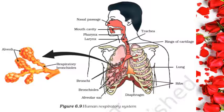The direction of diffusion depends upon the environmental conditions and the requirement of the plant. At night, when there is no photosynthesis, CO2 release is the major exchange activity. During the day, CO2 generated during respiration is used for photosynthesis. Hence, there is no CO2 released; instead, O2 is released in the major events.